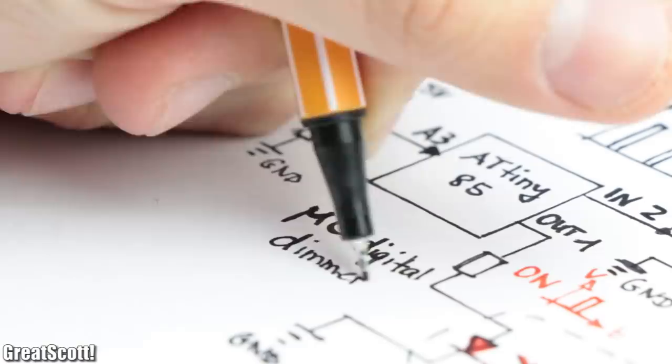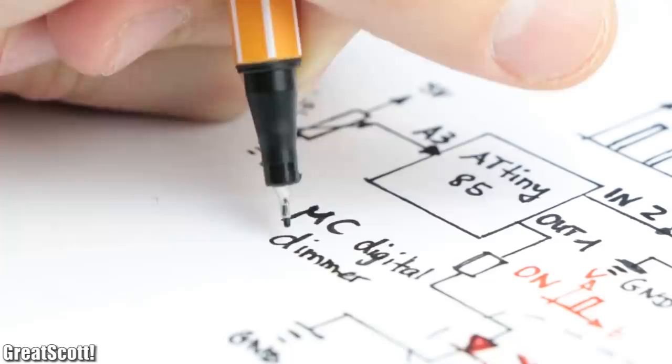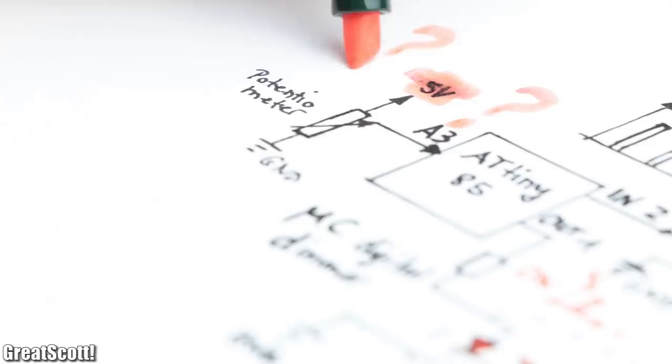And just like that we should be able to create a digital microcontroller dimmer. But what I forgot was how to supply 5V power for the circuit.